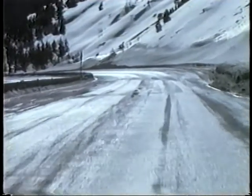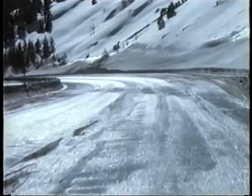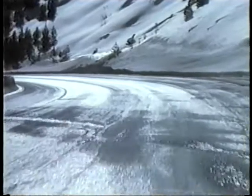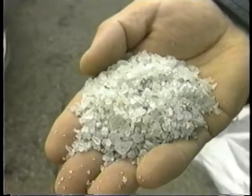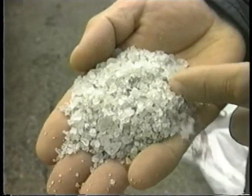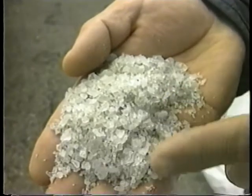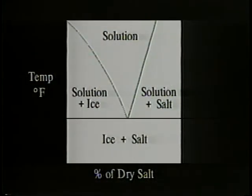The purpose of an ice control chemical is to lower the freezing point of water — that is, to melt ice or prevent water from forming ice. Sodium chloride is the most commonly used chemical for anti-icing and de-icing. Its action in depressing the freezing point is typical of all common ice control chemicals. This is the phase diagram of salt ice water mixtures.